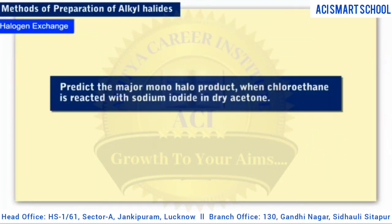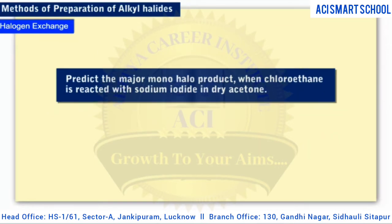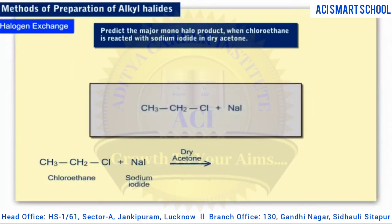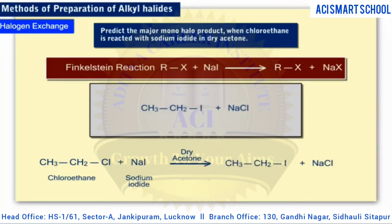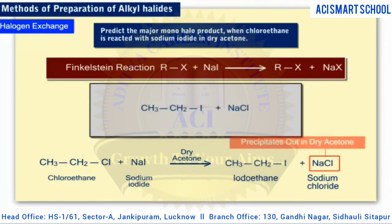Predict the major monohalo product when chloroethane is reacted with sodium iodide in dry acetone. After you write down the formulae for the reactants, you should be able to recognize the pattern for the Finkelstein reaction. The iodine in sodium iodide replaces the chlorine in chloroethane. Iodoethane and sodium chloride are formed. The sodium chloride precipitates in dry acetone, making it easy to isolate the iodoethane.